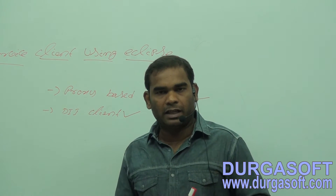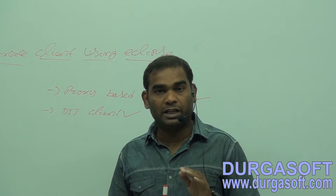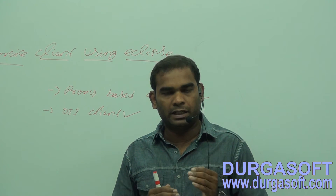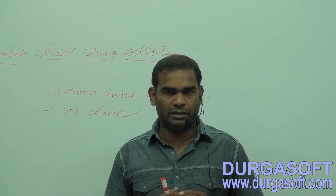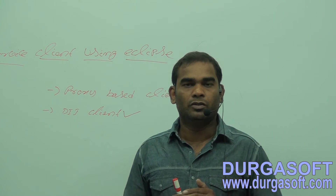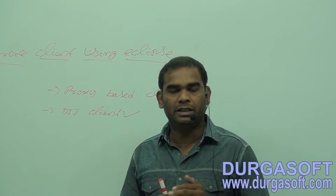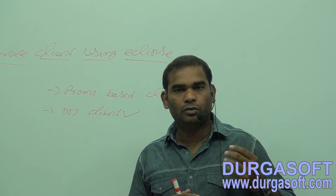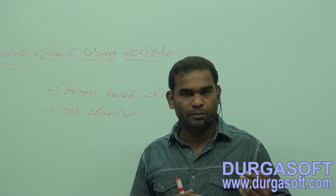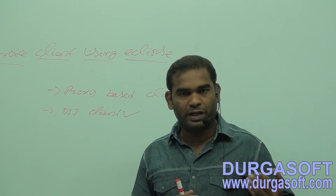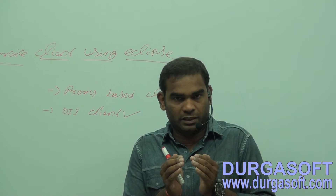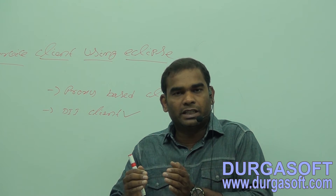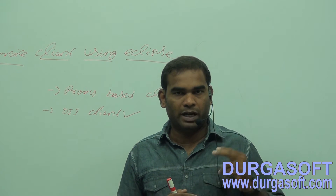In a DII client, the client never generates stubs, and never uses generated stubs in the client application to invoke the web services. Instead, web service implementation providers like Axis1, Axis2, Metro, JAX-WS RI, and CXF provide some set of classes which act as stubs, and those classes are used in the client application to invoke the web services.